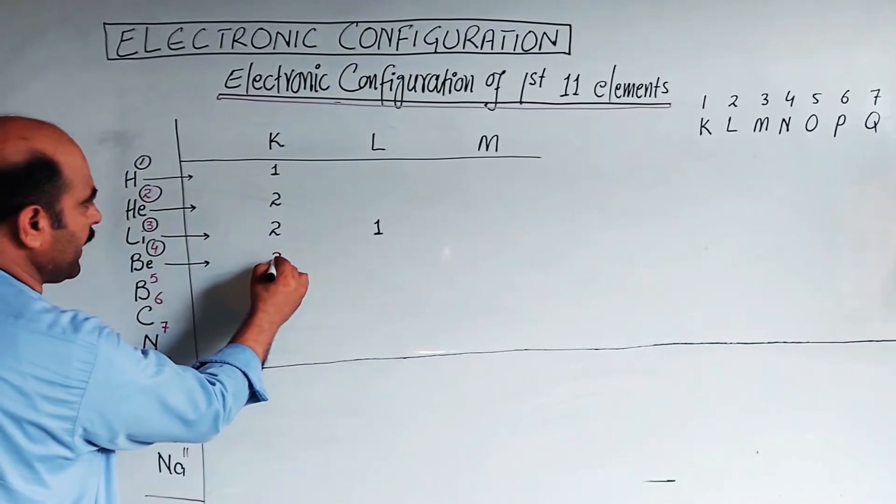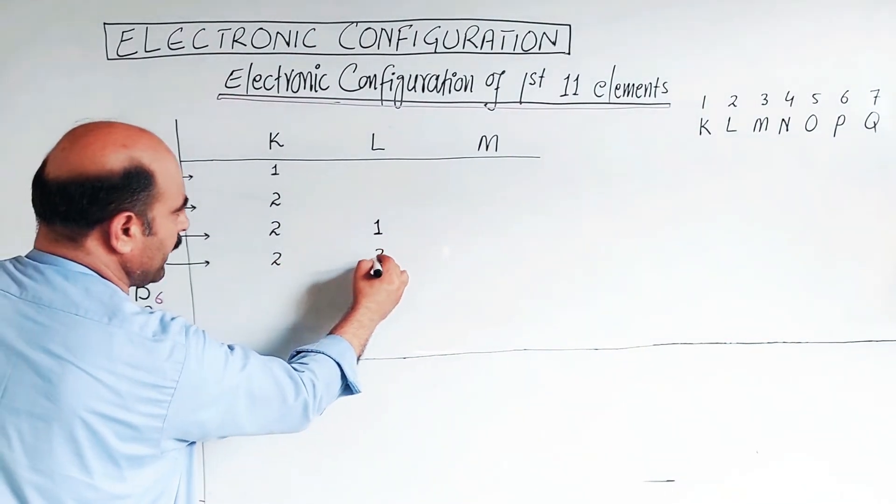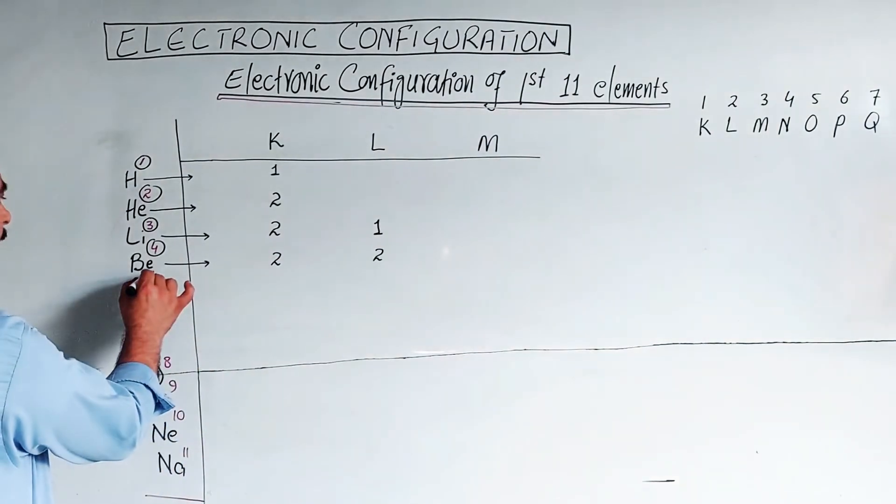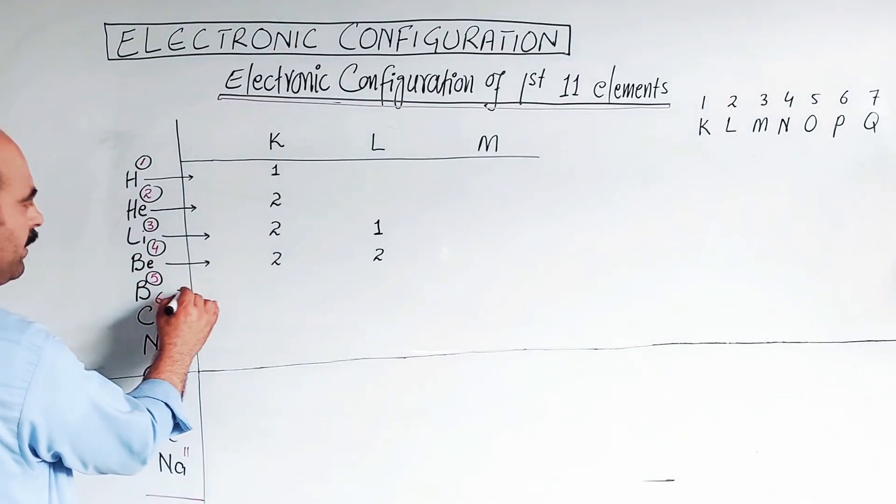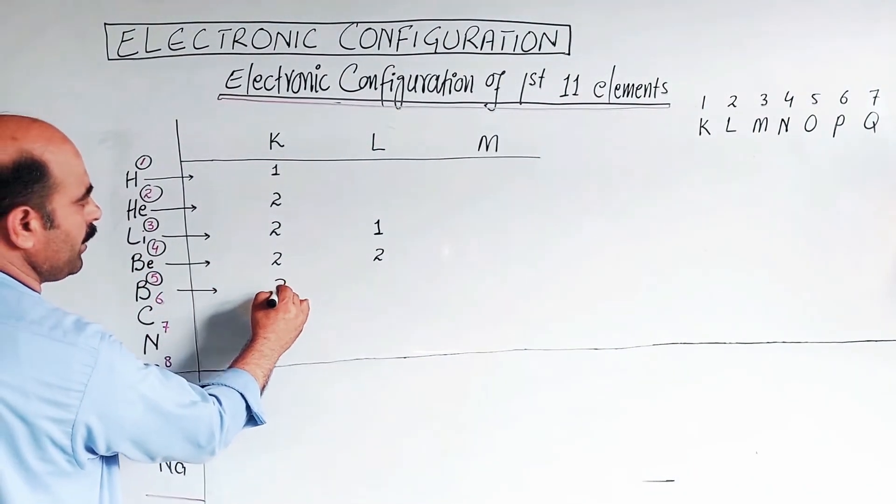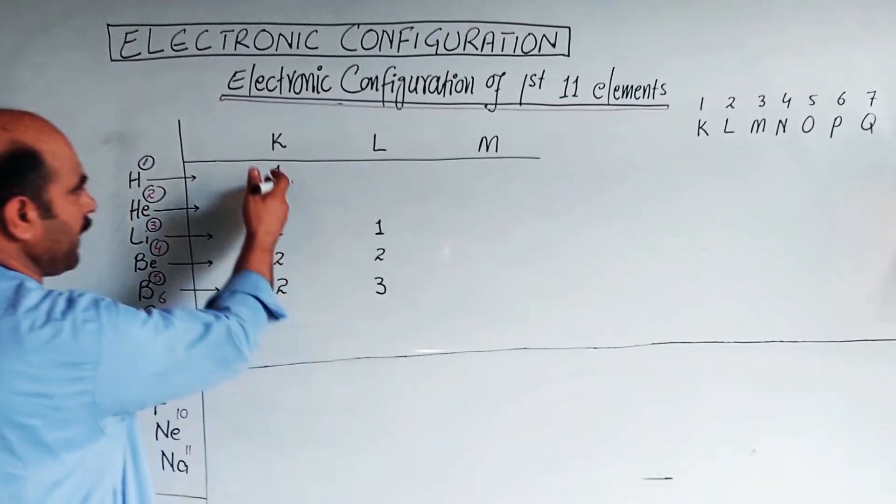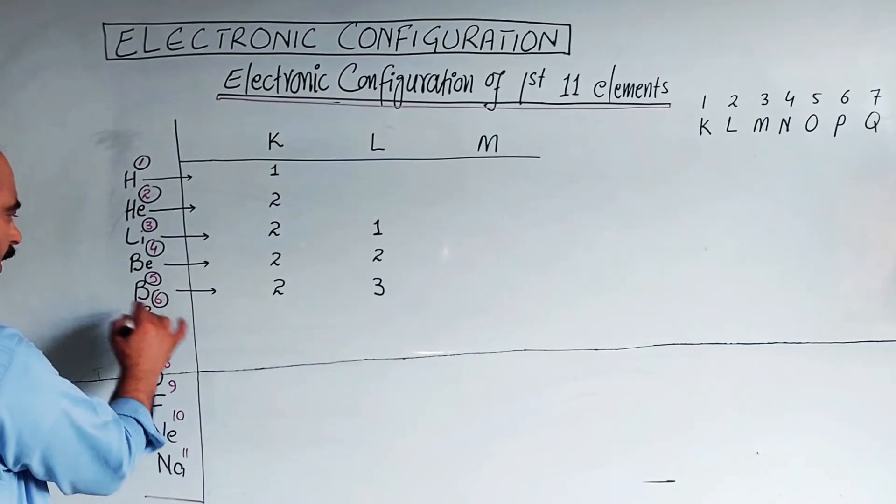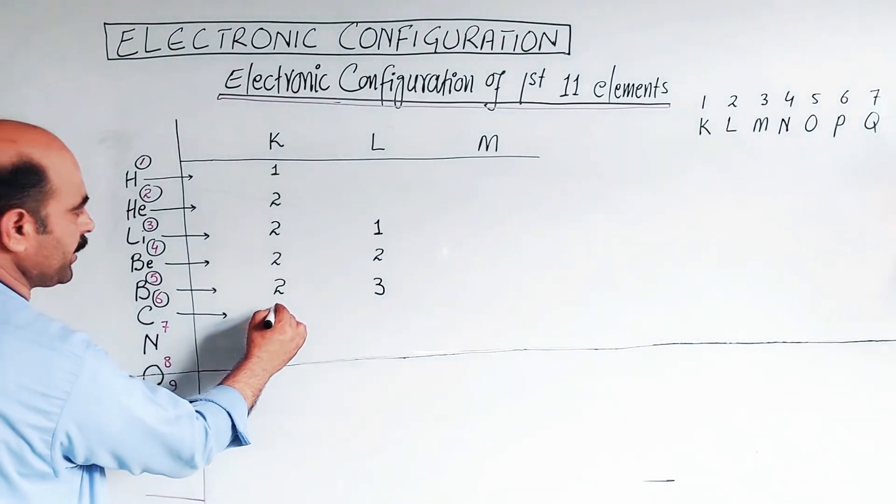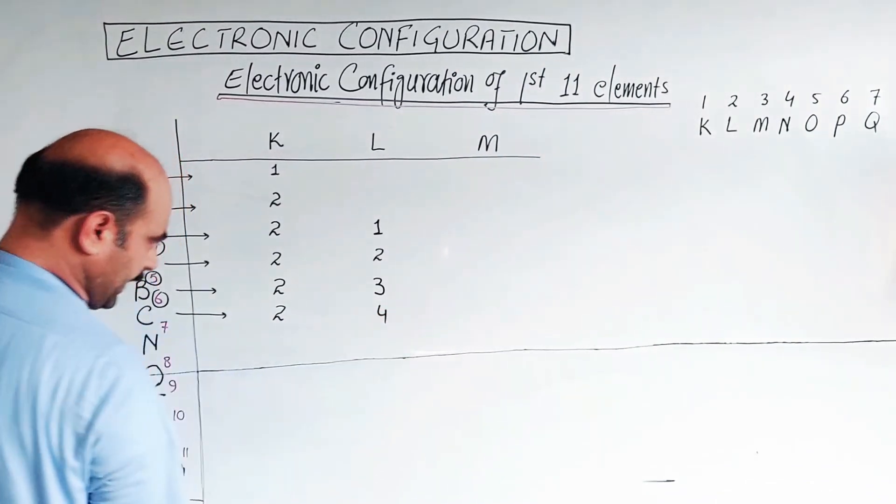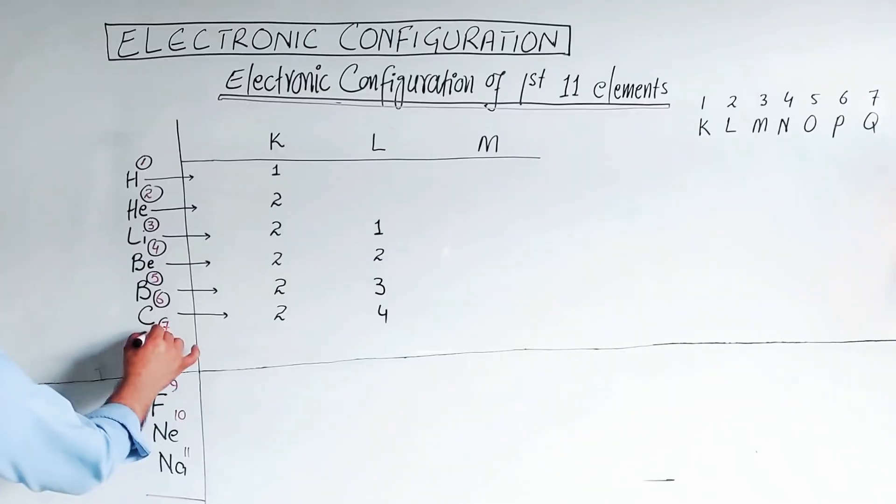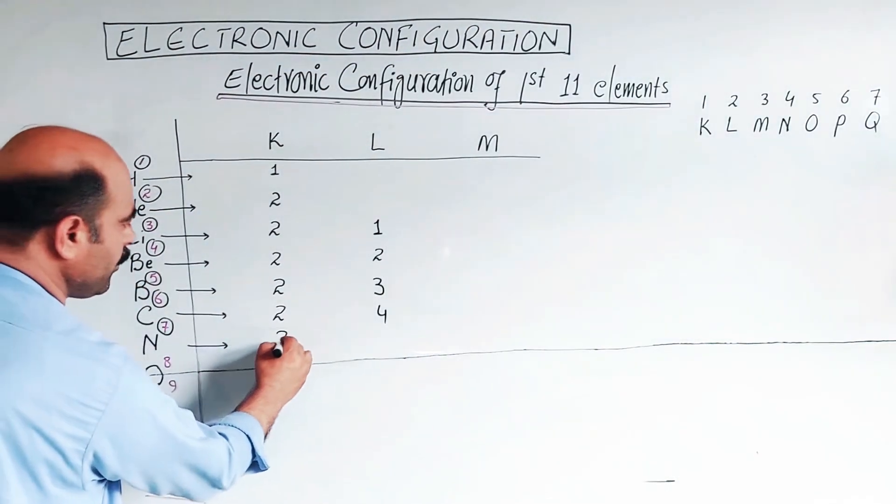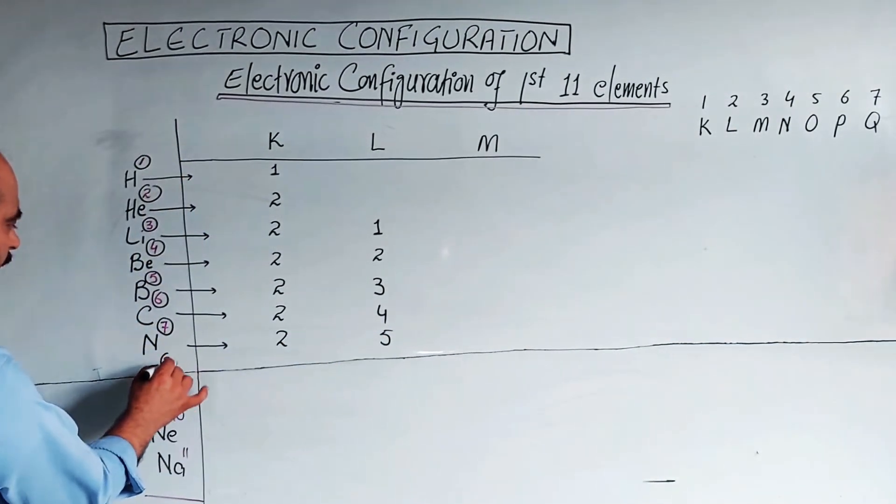Boron: atomic number 5, so the electron arrangement is 2, 3. Carbon: atomic number 6, so 2, 4. Nitrogen: atomic number 7, so 2, 5.